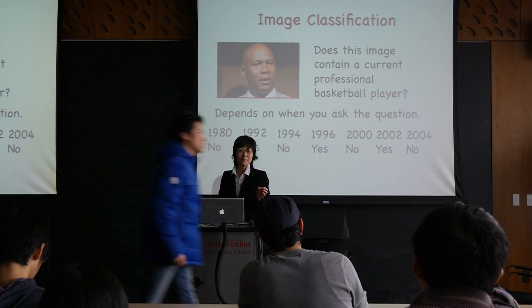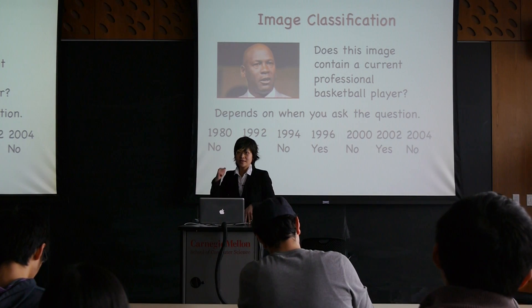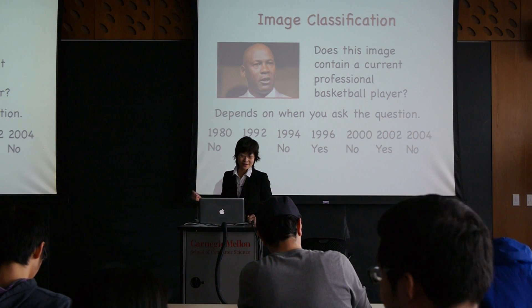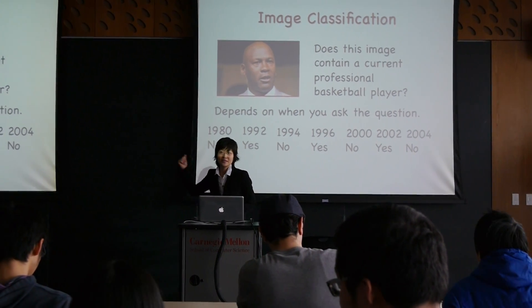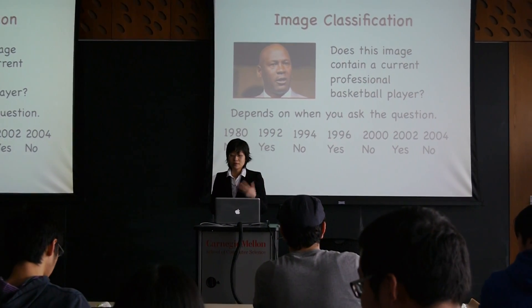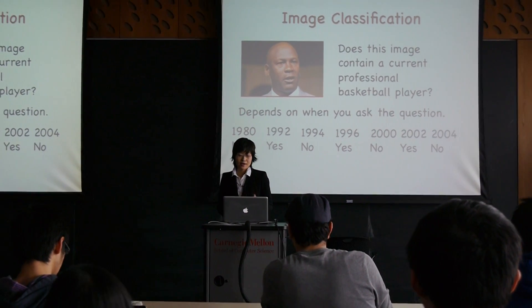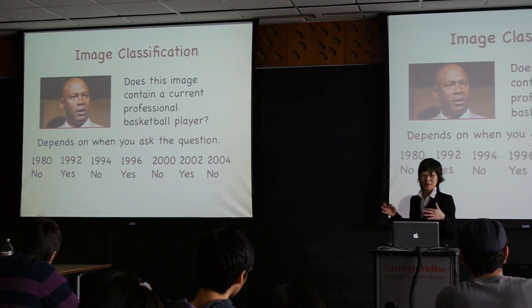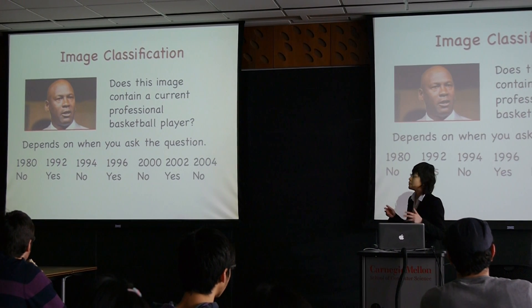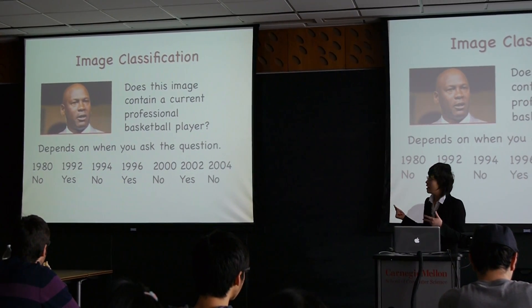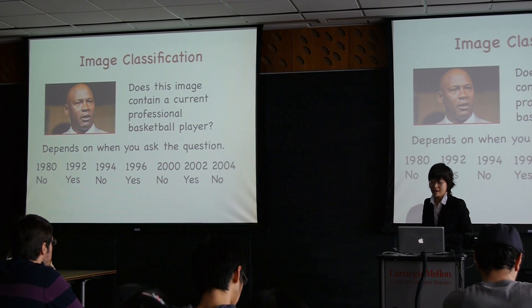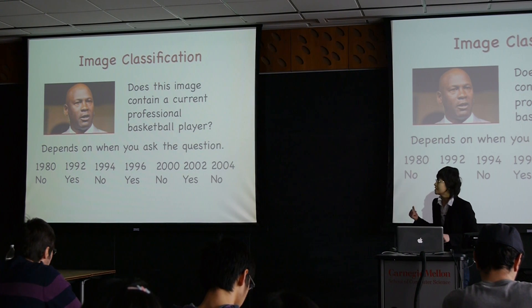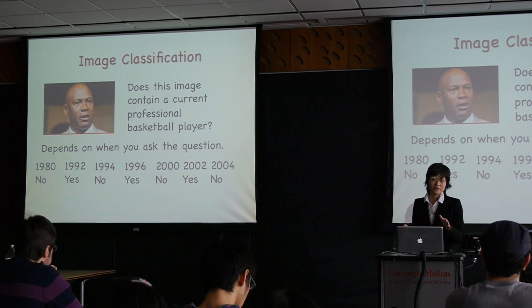As one example, if we're trying to classify images for whether they contain a current professional basketball player, there will be some images for which the correct classification might vary over time. Michael Jordan experienced some career switches in the past years. So if we were asked to classify this image in 1992, the correct answer would be yes, but if asked in 2004, the correct answer would be no.